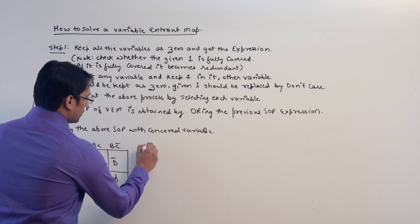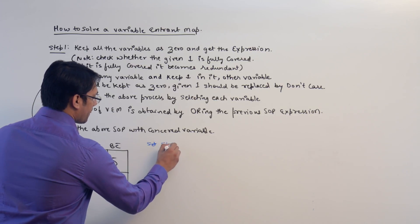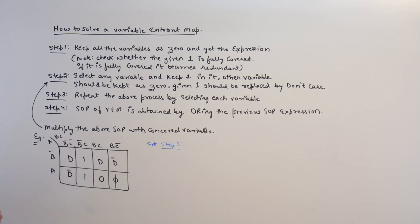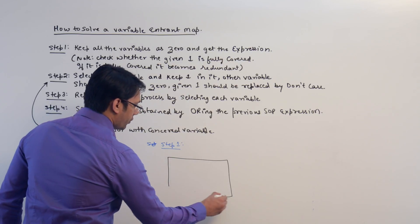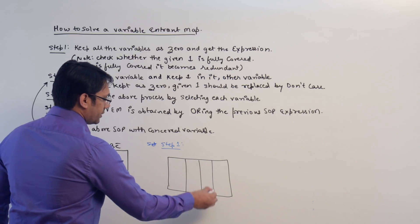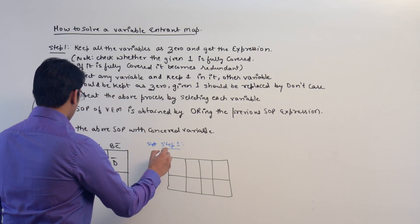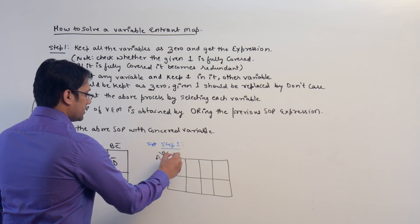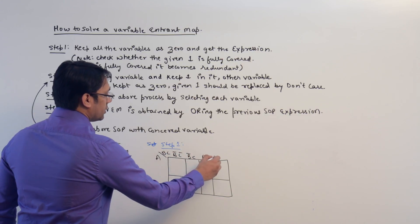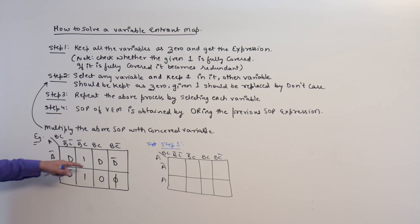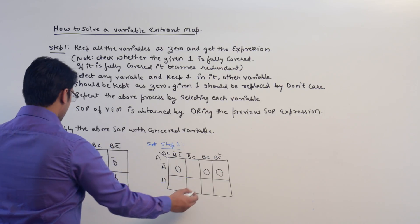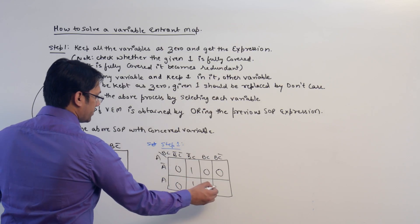Let me show you this step by step. For step one, for this K-map, keep all the variables as zero and get the expression. This is the K-map: this is a, this is bc, this is b complement c complement, b complement c, bc, bc complement, this is a complement, this is a. So step one is keep all the variables as zero. If you keep d as zero, d complement as zero, we get this.